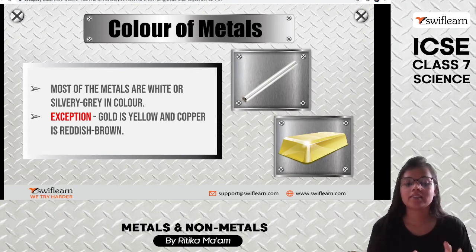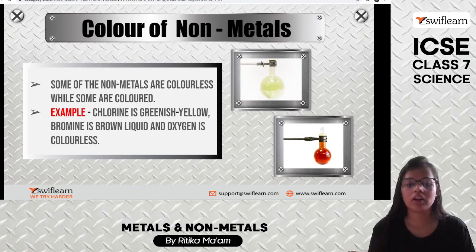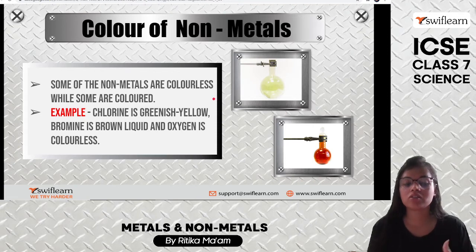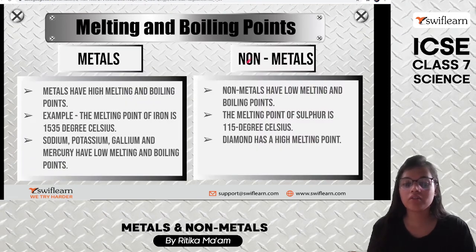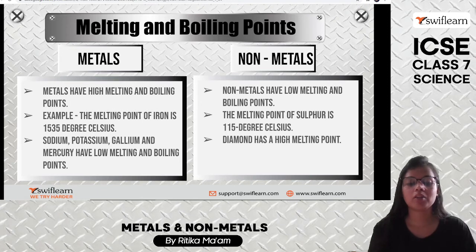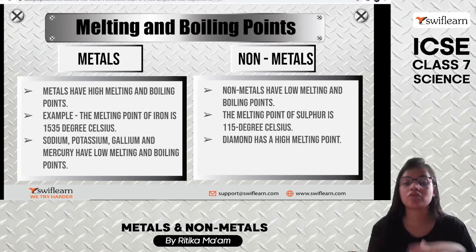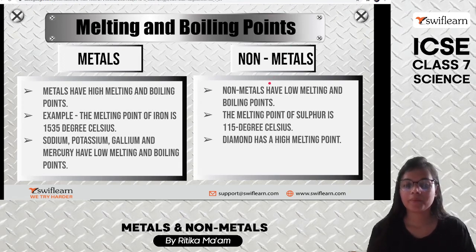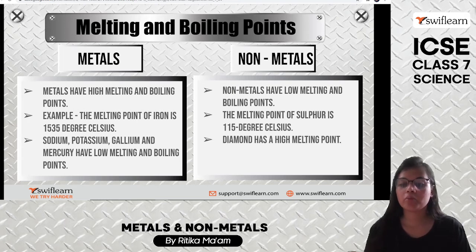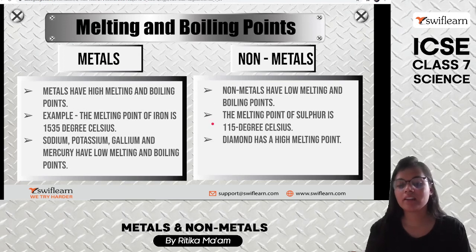Most metals are either white or silver-gray in color, except gold which is yellow and copper which is reddish-brown. Nonmetals come in a variety of colors — some are colorless, some are colored: chlorine is greenish-yellow, bromine is brown liquid, and oxygen is colorless. Regarding melting and boiling points: metals have high melting and boiling points, like iron's melting point of 1535°C. Sodium, potassium, gallium, and mercury have low melting and boiling points. Nonmetals have low melting and boiling points — sulfur's melting point is 115°C — but diamond is the exception with the highest melting point.